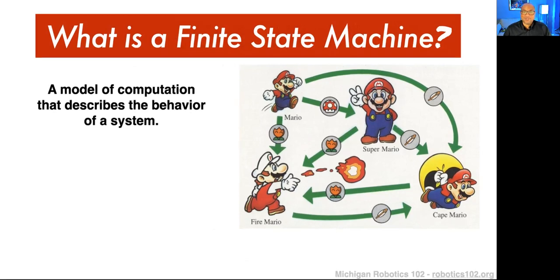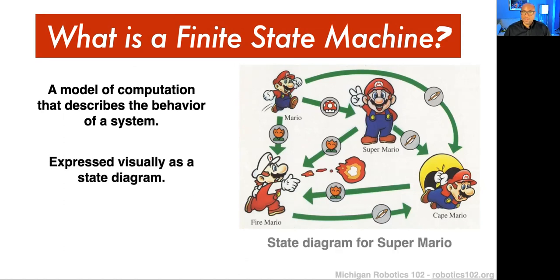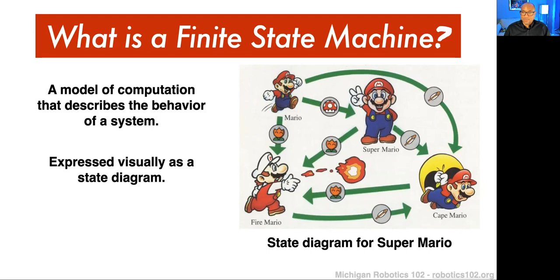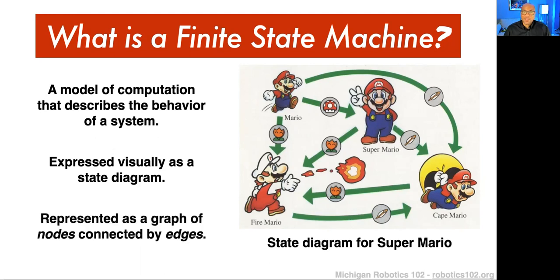If you're asking yourself what a finite state machine is, it's a model of computation — an abstracted model of computation that describes the behavior of a system. A finite state machine can be expressed visually as a state diagram. This state diagram shows how Mario can change over time and represents the finite state machine for his evolution over time. The underlying structure is what we call a graph. A graph has both nodes and edges, and as a general model of computation, you'll see it all around artificial intelligence and robotics.